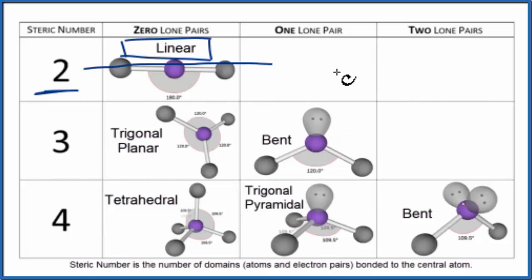We could also use the AXE notation to figure out the molecular geometry. A, that's that central nitrogen. X, that would be the number of atoms bonded to it. We have those two other nitrogen atoms. And E, that would be the number of lone pairs. We don't have any lone pairs.